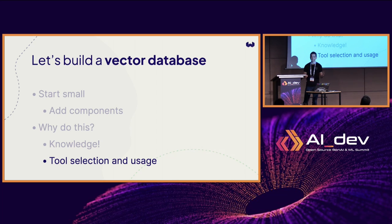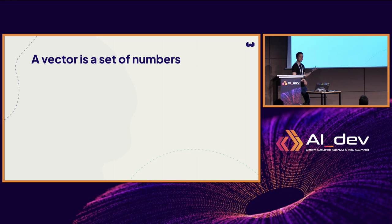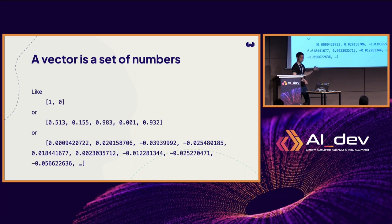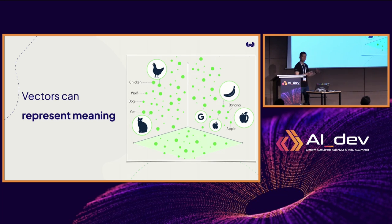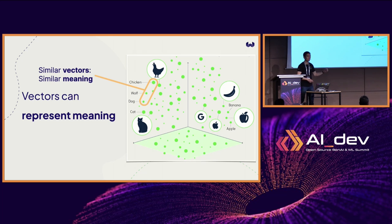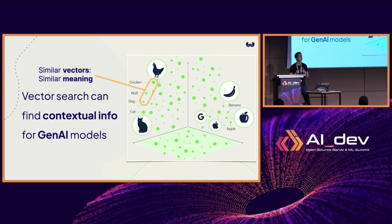It looks like most of you have used vectors and vector databases, but in case you haven't, I'll go through it very quickly. A vector is just a set of numbers — it can be any length, any number of dimensions like this. The reason that matters is that vectors can represent meaning. So if you put vectors into a three-dimensional space, a really cool, magical thing happens: similar vectors — similar sets of numbers — that are close in space together show something with similar meaning. And because of that, if you use vector search, you can find contextual information that is extremely powerful for generative AI models.